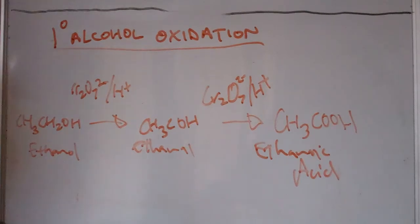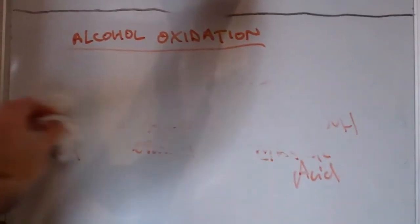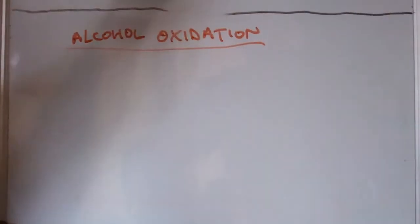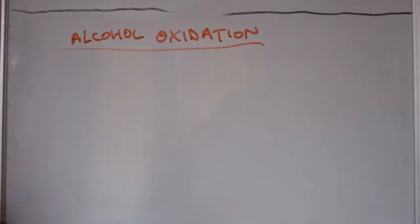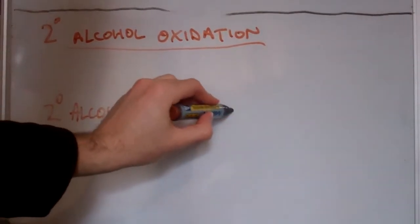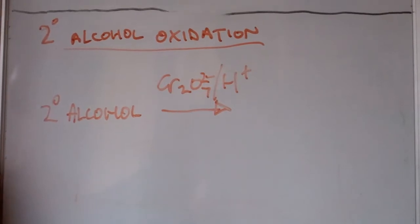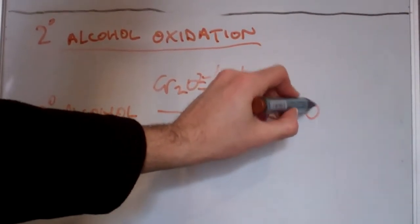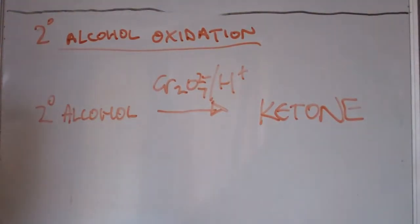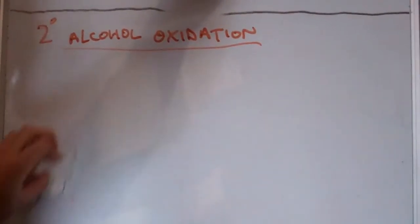Now we should look at secondary alcohol oxidation. It's pretty straightforward - it's only one step. Secondary alcohols are oxidized in one step under the same conditions: dichromate and hydrogen. What we end up with is a ketone. Secondary alcohols are oxidized to ketones in the presence of acidified dichromate. The ketone does not undergo any further oxidation, which is quite handy and pretty easy to remember.